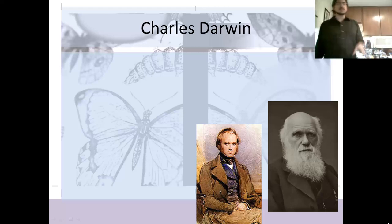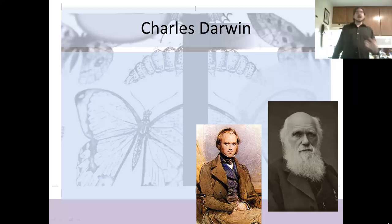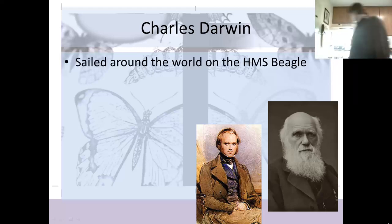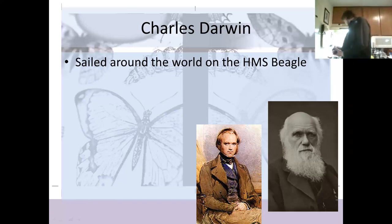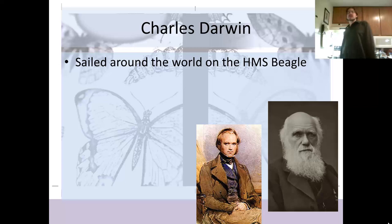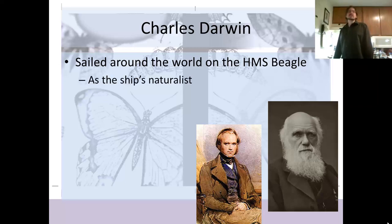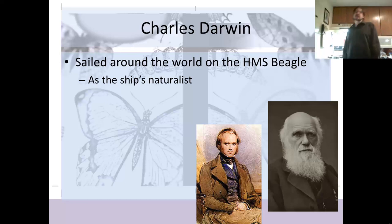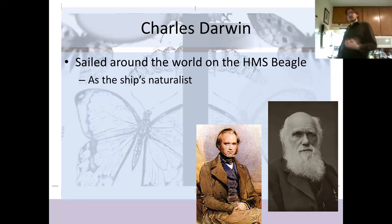Not to cheapen any of the things Darwin accomplished, because quite frankly it's an epic feat to have come to all of this information. Charles Darwin sailed around the world on the HMS Beagle, and he was most impressed with South America and a little place called the Galapagos Islands. He was the ship's naturalist — in the 1820s, 30s, and 40s, ships employed a naturalist to characterize the living world of the places they explored, which is pretty cool.